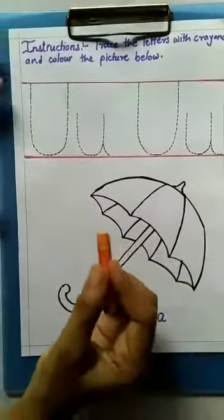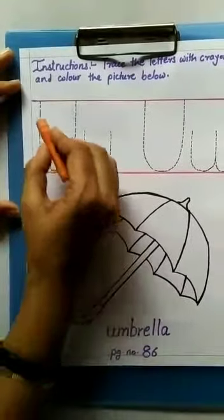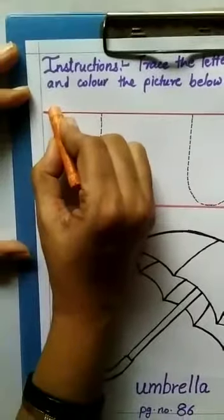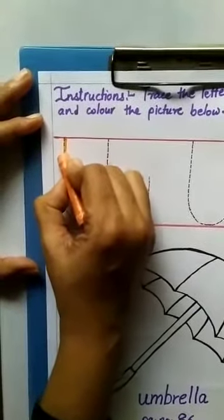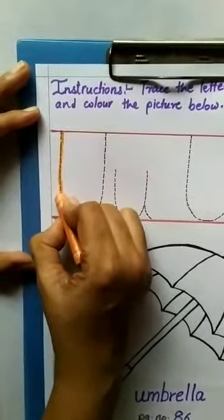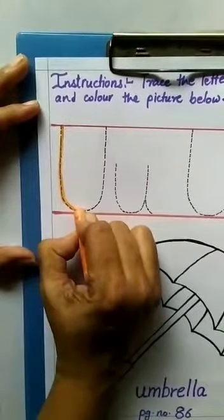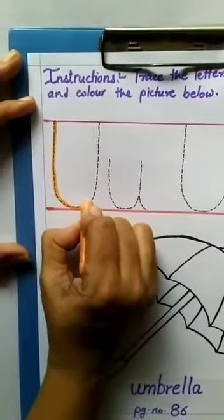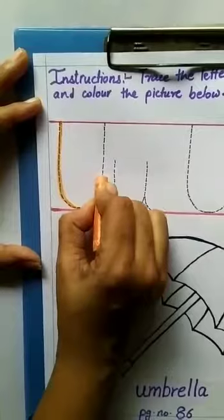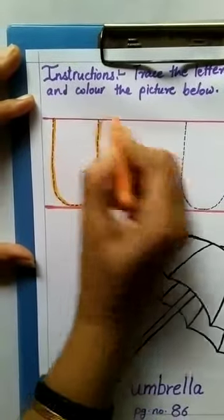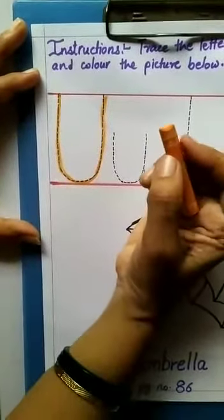Now, we will start tracing letter U. First, we will start from here and then we will come down. And we will take a small curve shape like this. Then, we will go up like this. Capital U.